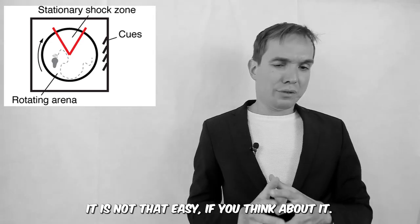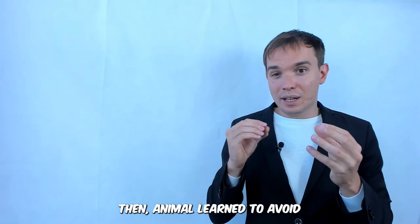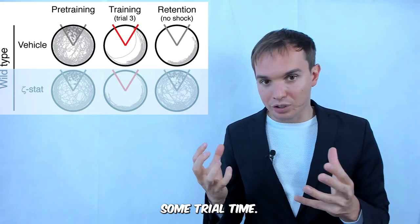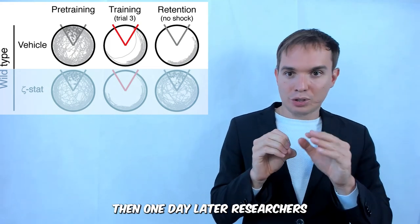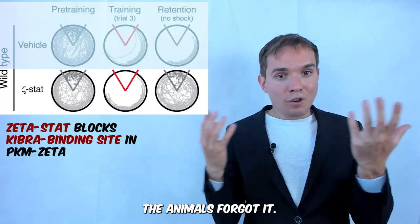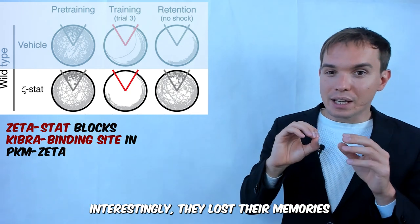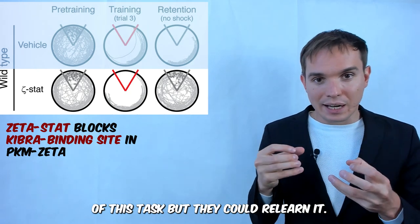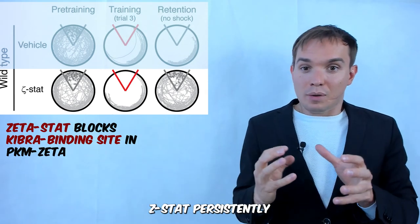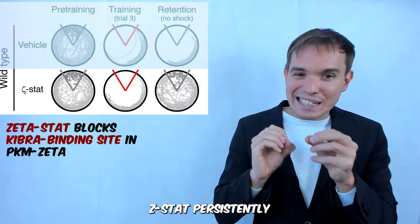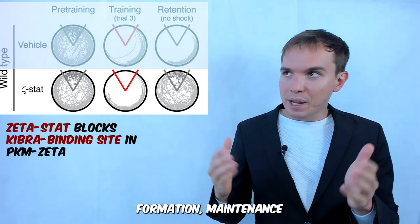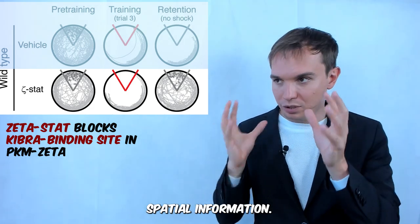Then the animal learned to avoid this zone after some trial time. But then, one day later, researchers injected the inhibitor Zeta-Stat. And guess what? The animal forgot it, lost the memories. But interestingly, they lost the memories of this task but they could relearn—that was explicitly tested as well. So the Zeta-Stat persistently disrupts previously acquired information, but once eliminated, doesn't impair formation, maintenance, or expression of newly acquired spatial information.